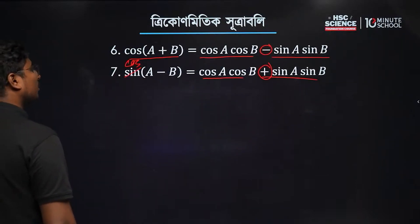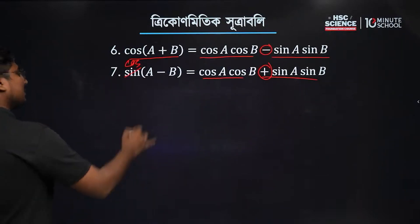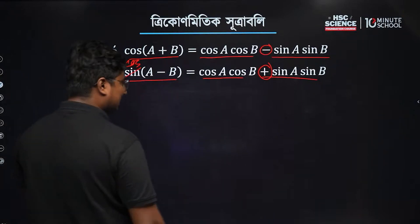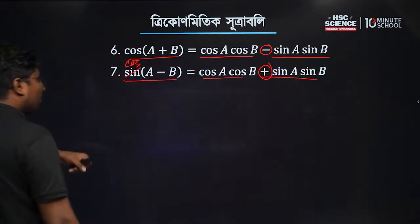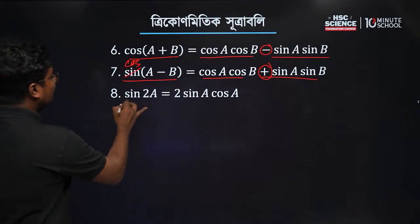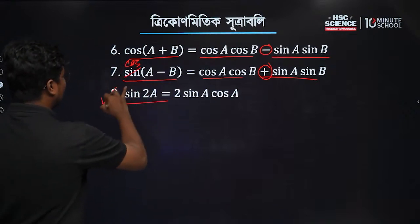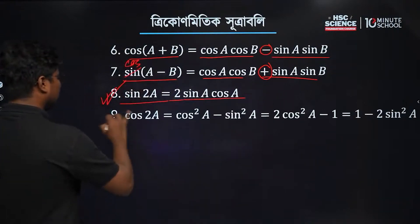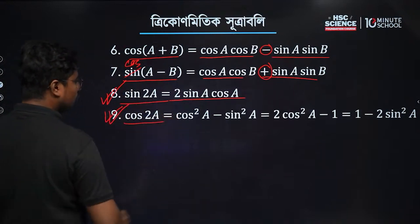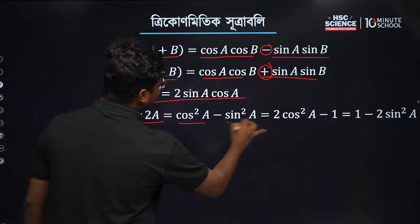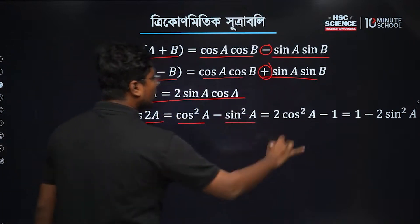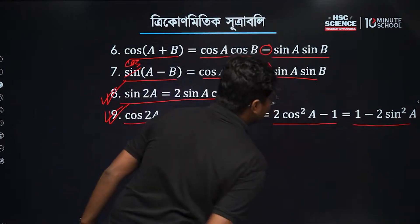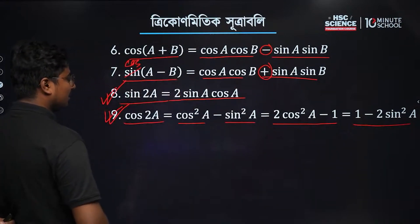If we have 5 number of times, we have cos(a − b): cos a cos b plus sin a sin b. The formula sin 2a is very important: sin 2a equals 2 sin a cos a. And the number of times, cos 2a equals cos squared a minus sin squared a.